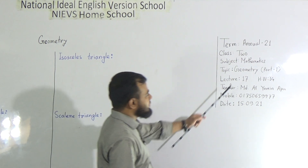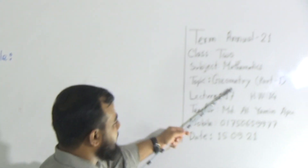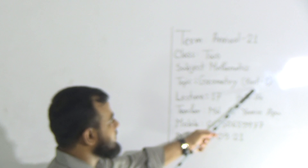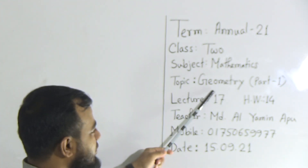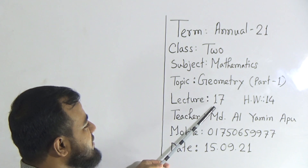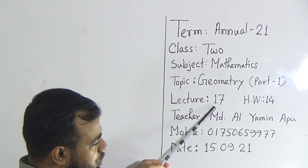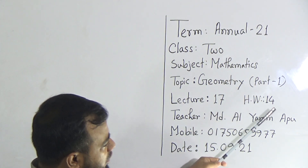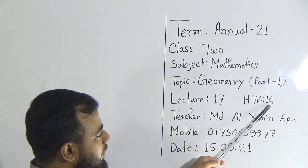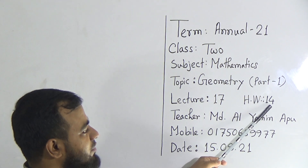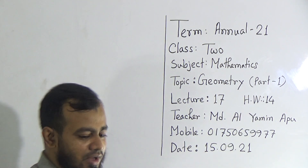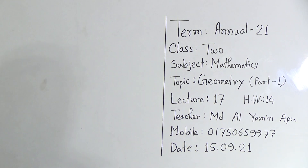Our today's topic is Geometry Part 1 — that means it's the first class on geometry. Your lecture number is 17 and you have a homework. Your homework number is 14 for the annual term examination.